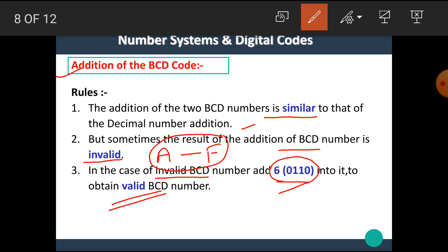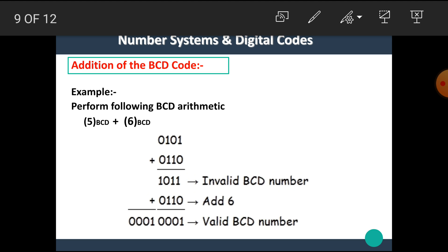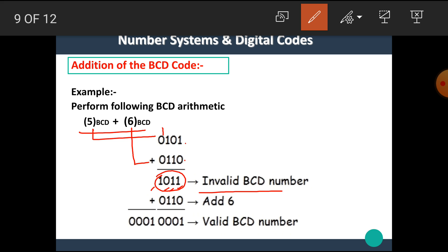If the result of the addition is invalid, we have to add 6 into it to get a valid BCD number. For example, perform the BCD arithmetic 5 plus 6. Write down the BCD equivalents: BCD of 5 is 0101 and BCD of 6 is 0110. Adding these gives 1011, but 1011 is an invalid BCD number.